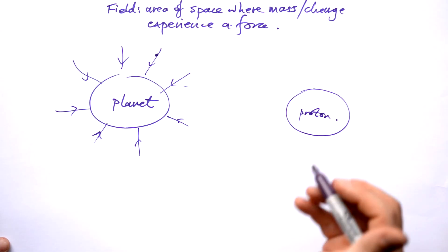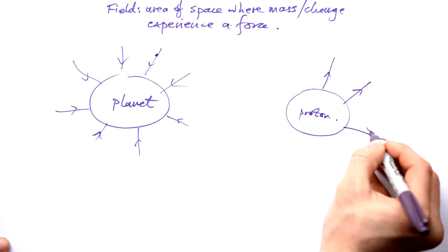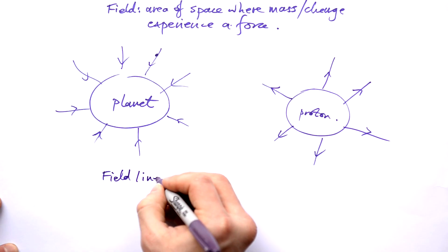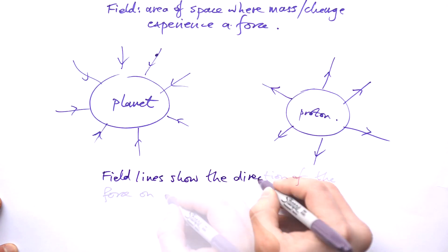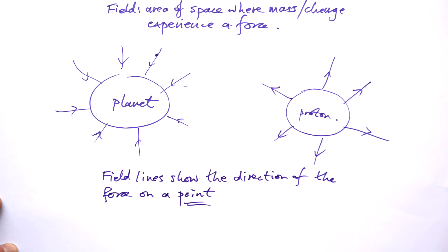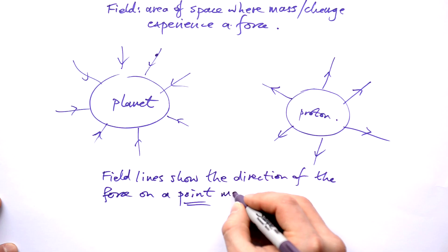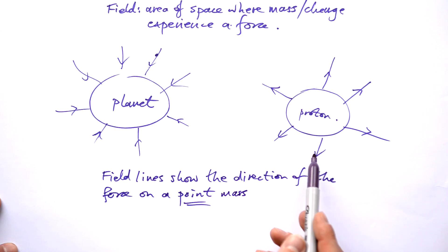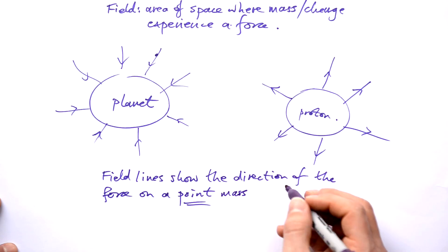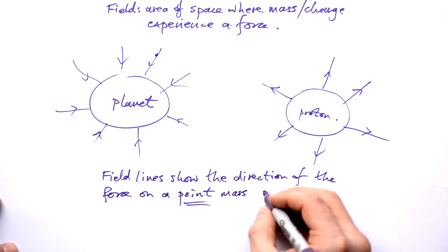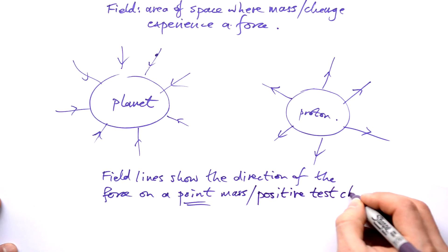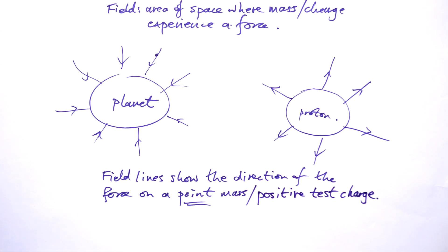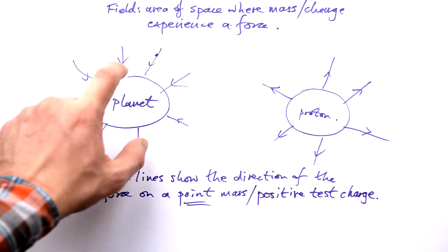So which way do we put the field lines? They actually go outwards for a proton. Field lines show the direction of the force on a point — and by point we mean something that has no volume itself — specifically a point mass. Since the field lines are going away, we are talking about a positive point charge. We can call these point masses and charges 'test charges' and 'test masses' — we are testing the gravitational field or electric field.